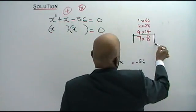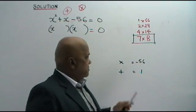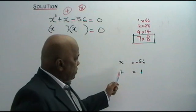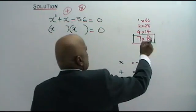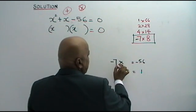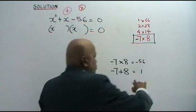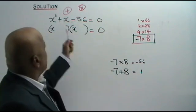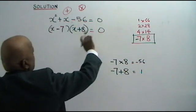The right pair is 7 and 8 — their difference is 1. Since the product must be negative 56, one is positive and one is negative; and since the sum is positive 1, the bigger number is positive. So the correct pair is negative 7 and positive 8: negative 7 times 8 is negative 56, and negative 7 plus 8 is 1. We transfer these two numbers into the brackets: x minus 7 times x plus 8 equals 0.